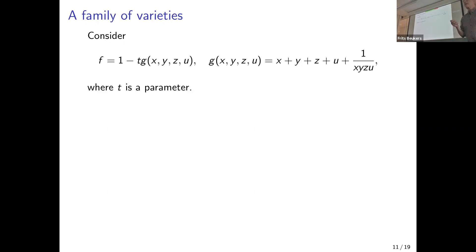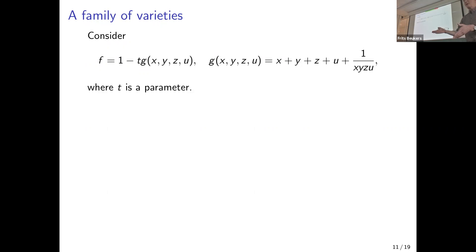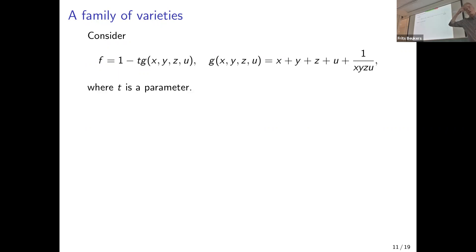For p equal to 5 we can ensure there is a Frobenius structure, but for p equal to 2 and 3 the techniques become more complicated. Our methods are quite elementary so we prefer to stick to that without going into those intricacies.